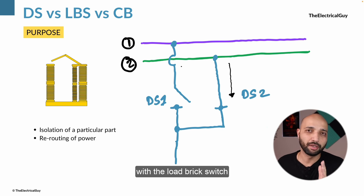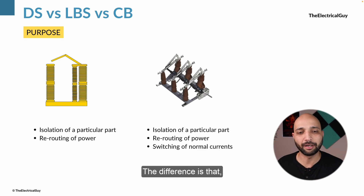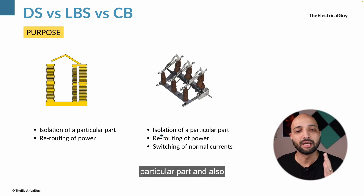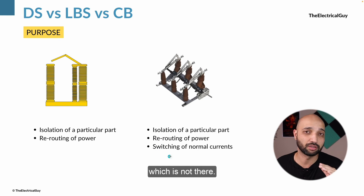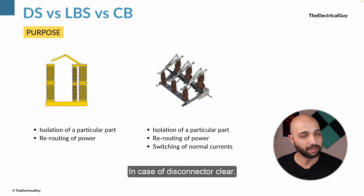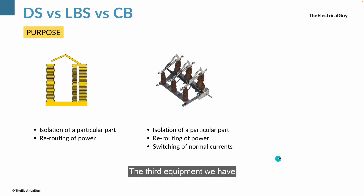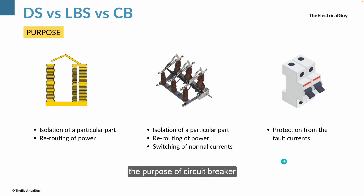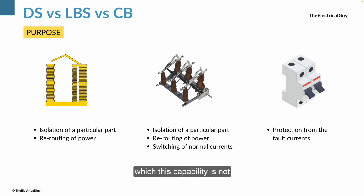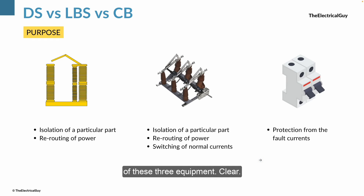Comparing with the load break switch or switch disconnector: they are also capable of isolating a particular part and rerouting power, but additionally they are capable of switching normal currents, which disconnectors cannot do. The circuit breaker's purpose is to protect the system or circuit from abnormal short circuit currents — a capability not present in switch disconnectors or disconnectors.